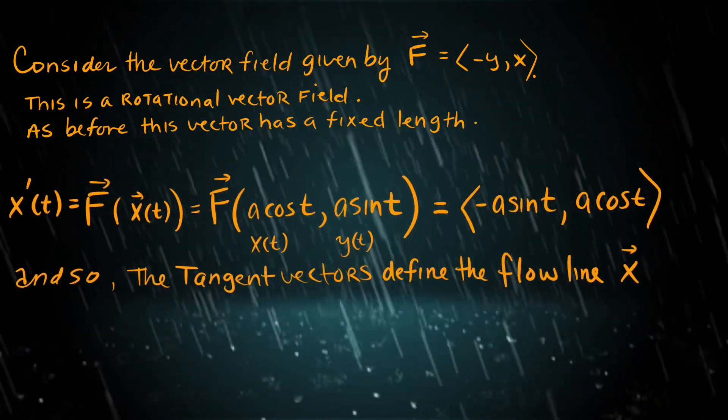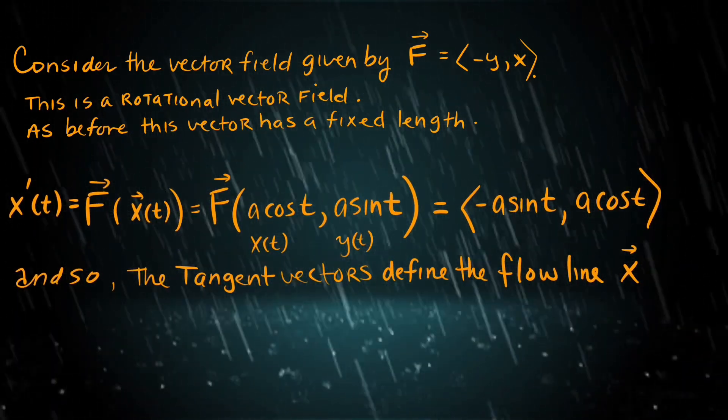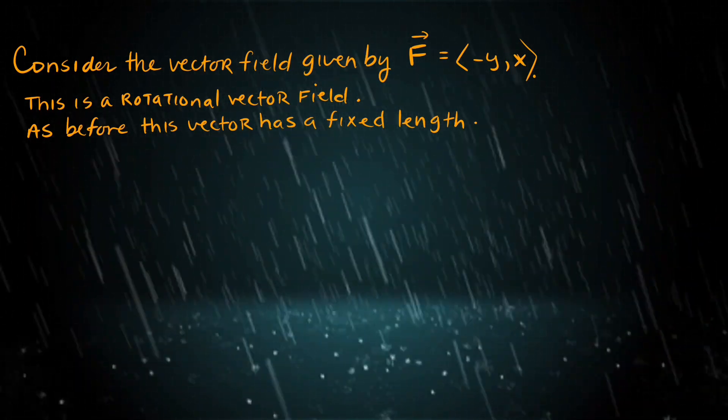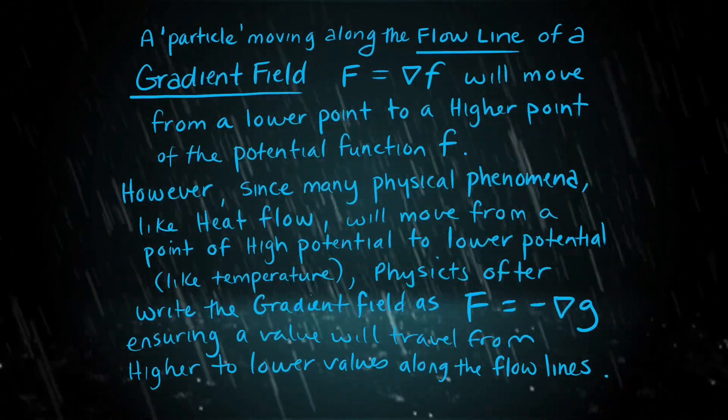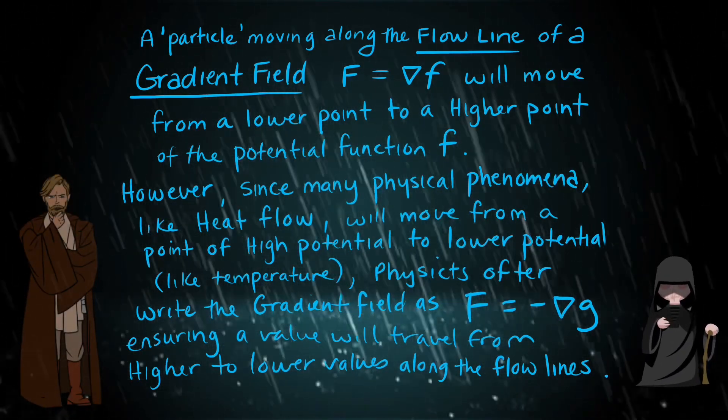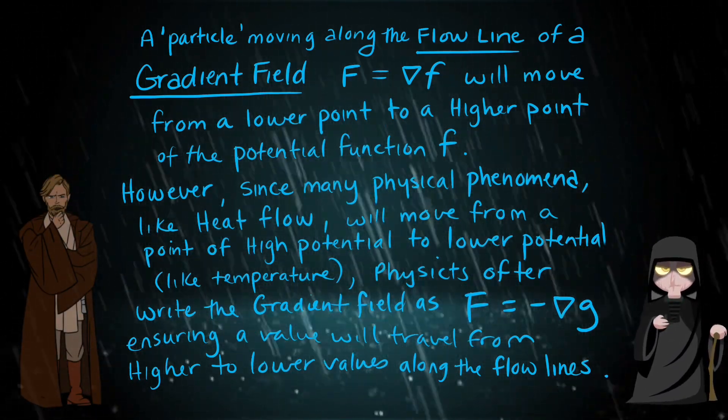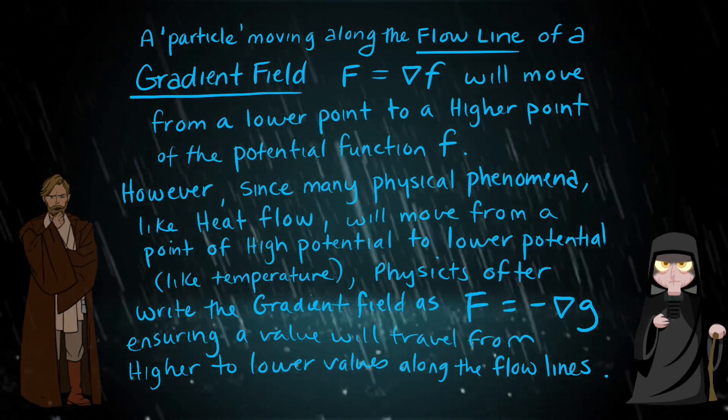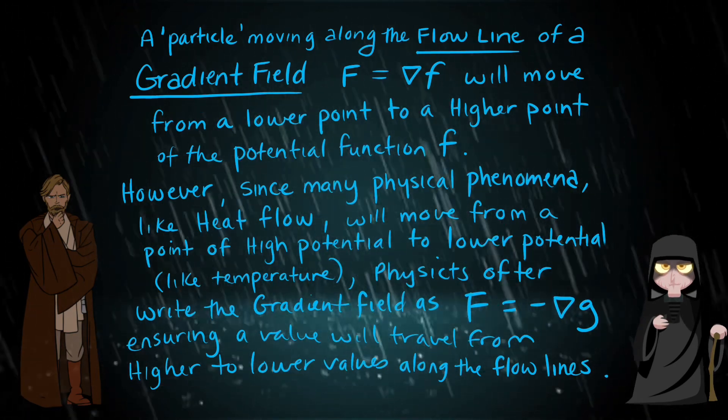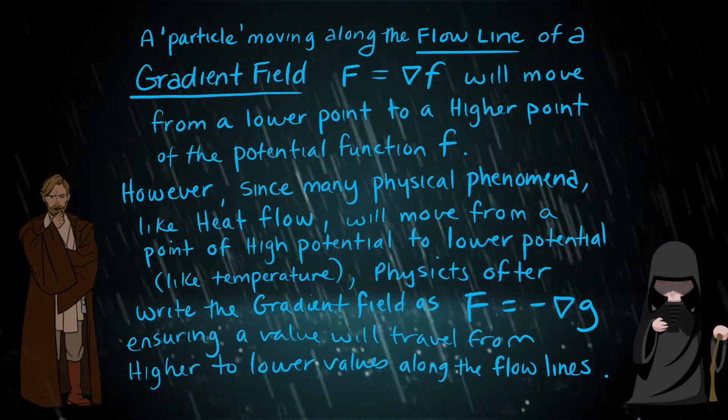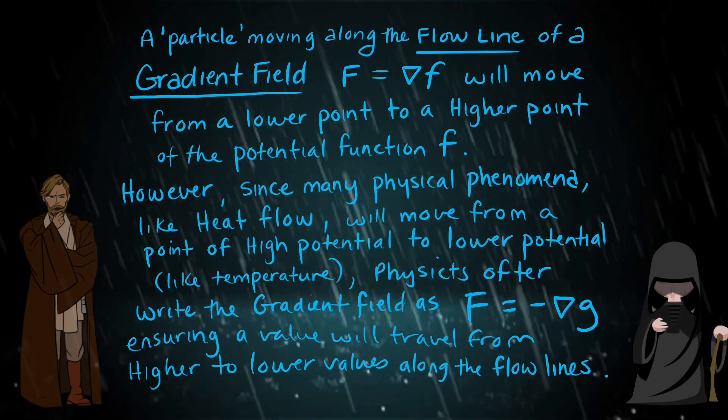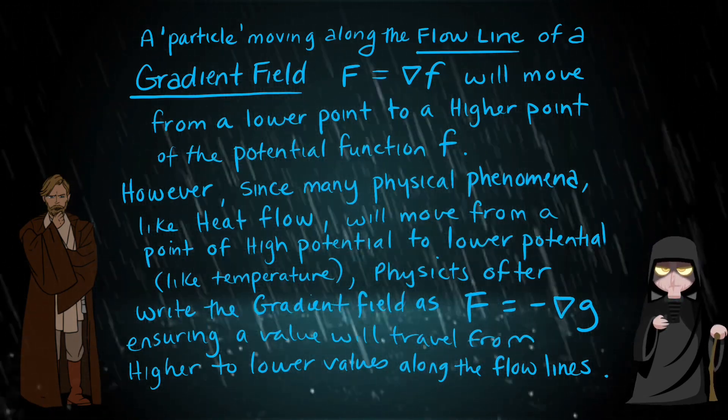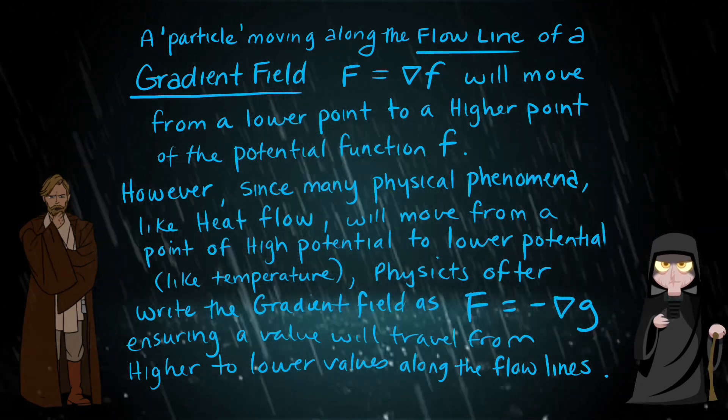We see that the tangent vectors really do define the flow line path x that a particle would take by traveling in this field. A particle moving along a flow line of a gradient field will move from lower point to a higher point of the potential function f. However, since many physical phenomena like heat flow will move from a point of high potential to low potential, physicists often write the gradient field as F = -∇g, ensuring that the value will travel from a higher to lower value as it would with potential energy.